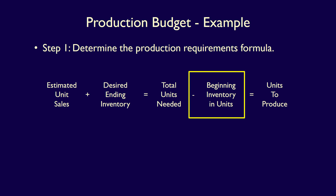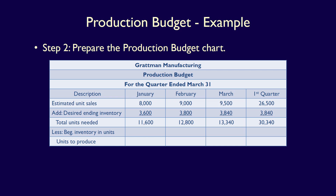We now deduct the beginning inventory in units from the total units needed, because the beginning inventory is already on the shelf and doesn't need to be produced. The beginning inventory for one period equals the closing inventory from the prior period. For example, beginning inventory on February 1 is the closing inventory from January 31, so beginning inventory for February is 3,600 units — the desired ending inventory for January. The beginning inventory for March is therefore the desired ending inventory for February: 3,800 units.